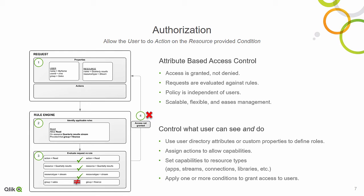You use user directory attributes or custom properties to define roles within Qlik Sense, assign actions to allow capabilities, set capabilities to resource types like apps, streams, and data connections, and you can also apply one or more conditions to grant access to users.